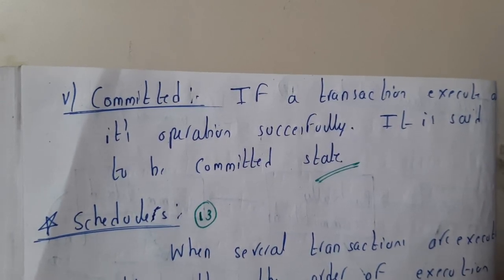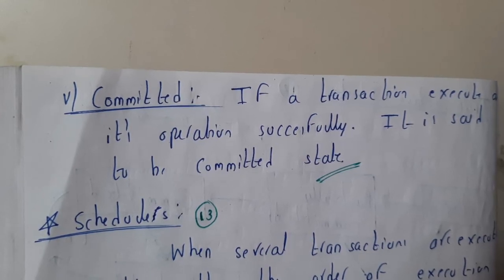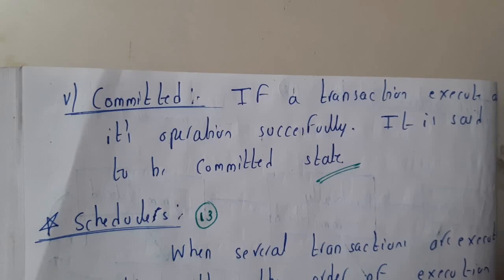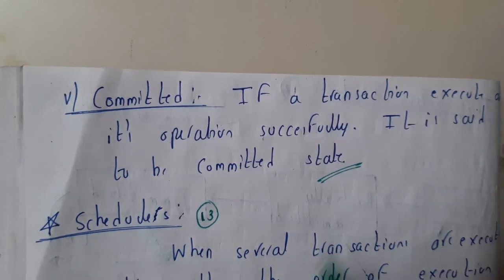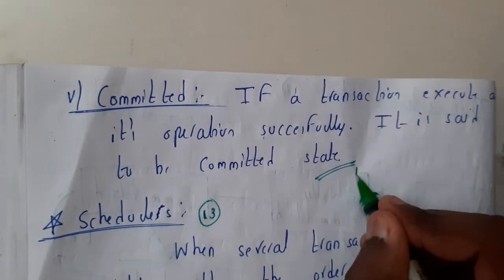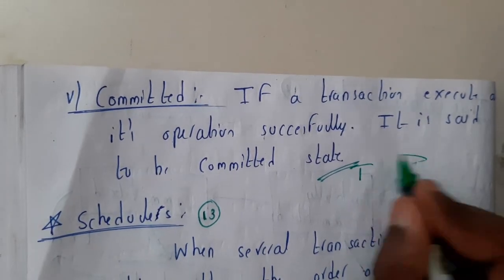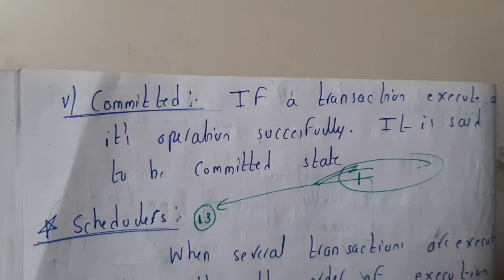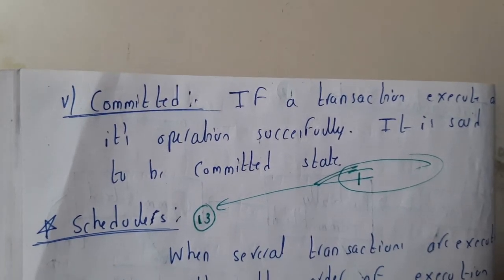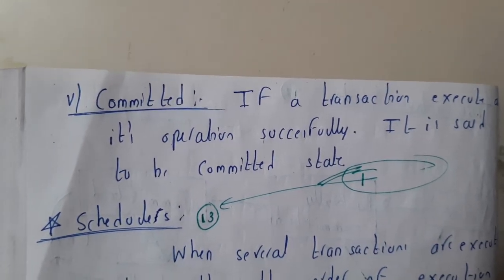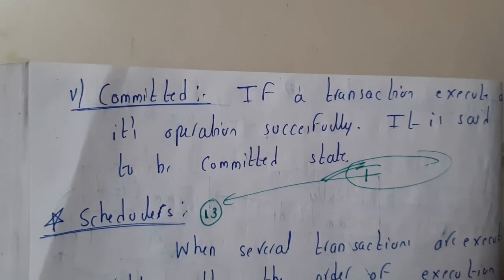I hope everyone got a clear idea on all five states we discussed. In the next tutorial, we'll be going through schedulers — schedulers help with parallel or serial execution of transactions and decide how transactions should execute. Thanks for watching.